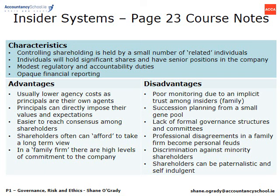Individuals hold significant shares and senior positions in the company, and therefore the organisation is allowed to have modest regulatory and accountability duties. The feeling is that when you're not exposed to agency issues, it would be an unreasonable burden to expect onerous regulatory and accountability duties. That manifests in what we call opaque financial reporting — it doesn't need to be as transparent as a publicly listed company because the public are not exposed to any wrongdoing in the same way investors would be.